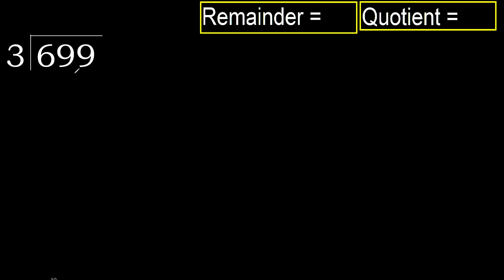699 divided by 3. 6 is not less, therefore with 6. 3.